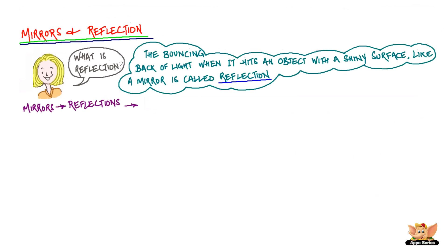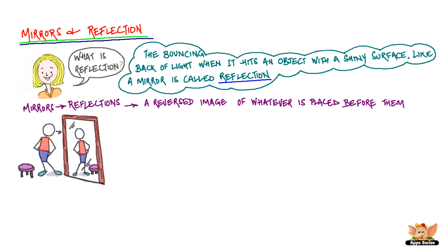Mirrors make reflections and create a reversed image of whatever is placed before them. You look in the mirror before coming to school every day. You see your own image reflected back and you also see the reflection of some other objects around you.